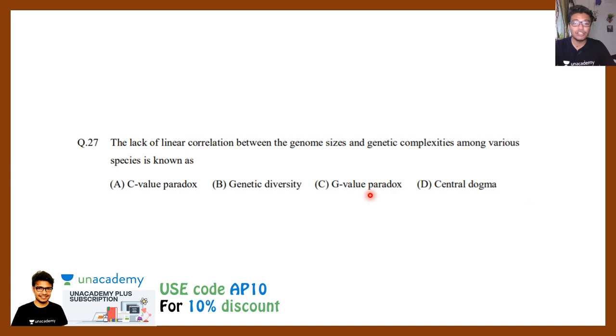Question number 27: The lack of linear correlation between genome size and genetic complexity among various species is known as C-value paradox, genetic diversity, G-value paradox, or central dogma. Let me tell you, people might have an idea that when an organism is getting more complicated and complex, their genome would also get very complex. So there is kind of a one-to-one correlation between genomic complexity and organismal complexity. But when sequencing results started coming out, it has been noted that this kind of correlation does not exist. Though it was logically possible, this did not exist. Many simple organisms had fairly complex genomes, and there were many complex organisms which had fairly simple genomes. So there is a paradox which is existing, and that is known as C-value paradox. The correct option would be option A.